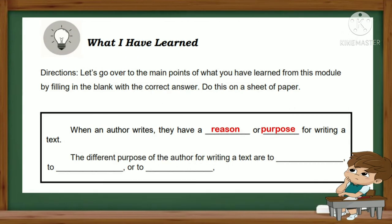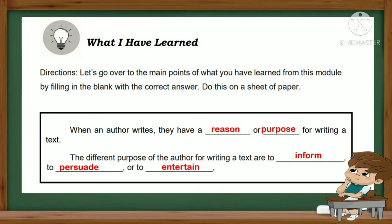When an author writes, they have a reason or purpose for writing a text. The different purposes of the author for writing a text are to inform, to persuade, or to entertain.